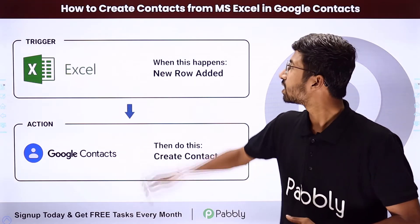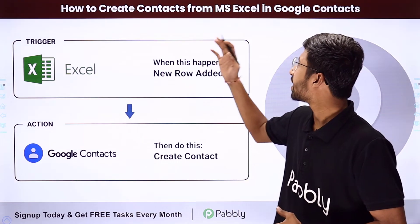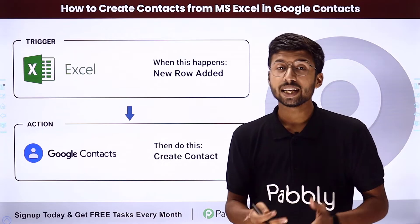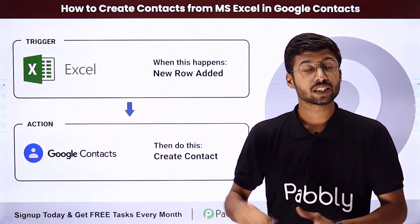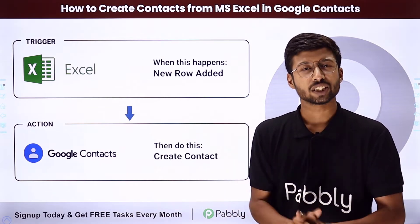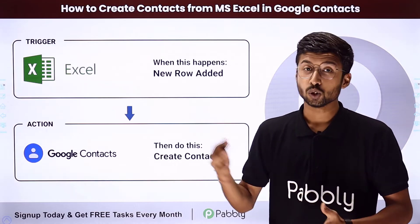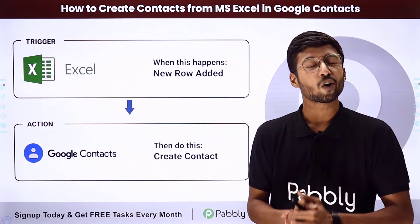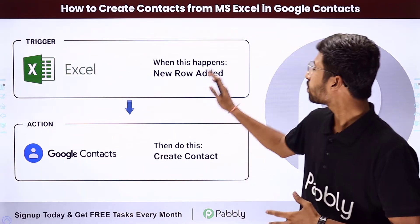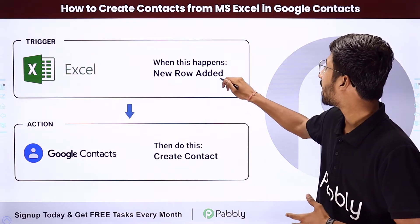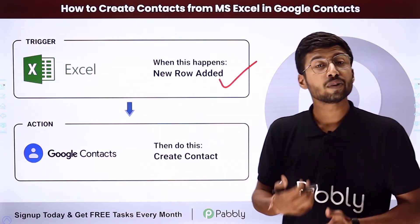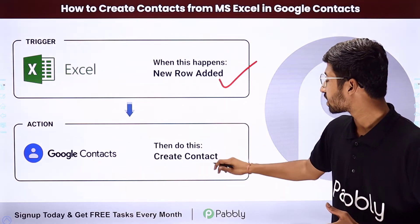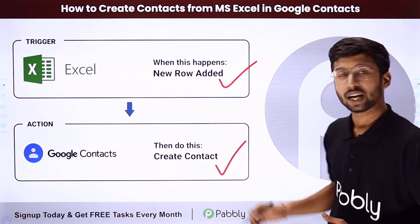In this video, we will discuss how to create contacts from MS Excel in Google Contacts. Suppose you are adding new people or new contact details into your Excel sheet and you want to add those contacts into your Google Contacts. The trigger of this automation will be the addition of a new row or new data in MS Excel, and the action will be the creation of contacts in Google Contacts.